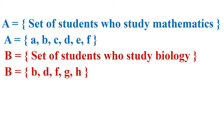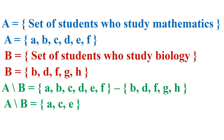Let A be the set of students who study mathematics and set B be the students who study biology. Now let set A contain elements A, B, C, D, E, F and set B contain elements B, D, F, G and H. We are interested to find the difference of these two sets. A difference B, written as A slash B or A minus B, is obtained by writing all the elements of set A minus writing all the elements of set B.